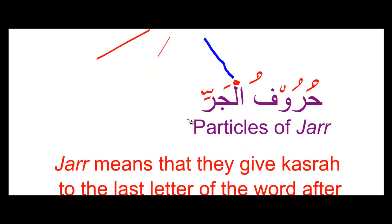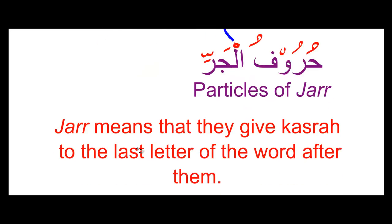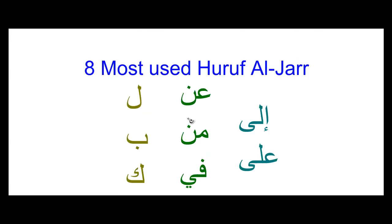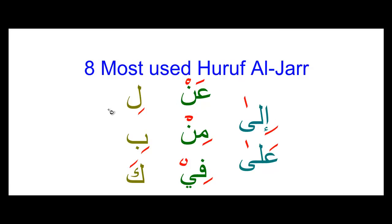What does jar mean? Jar means that they give kasra to the last letter of the word after them, and we'll understand once we get to the examples. Now the eight most used huroof al-jar are: li, b, ka, an, min, fi, ila, and ala. These are the eight most used huroof al-jar and we're going to be speaking about each of them with examples.